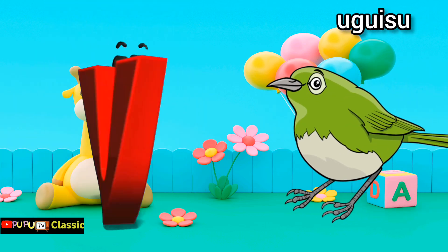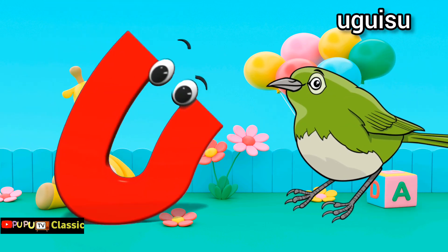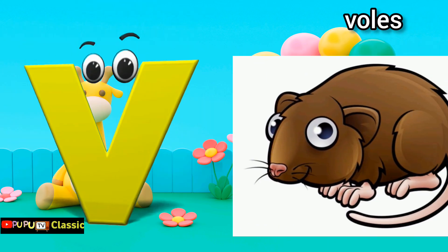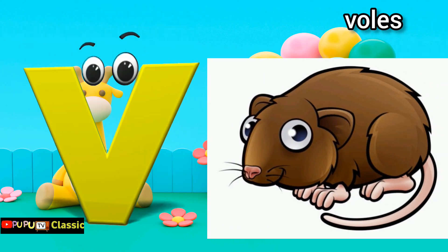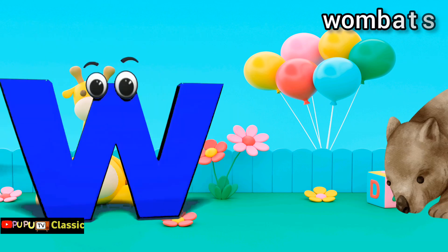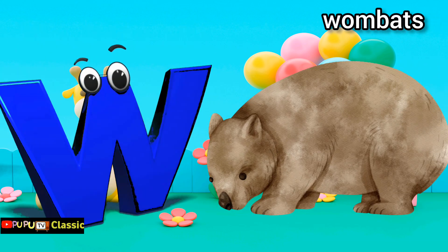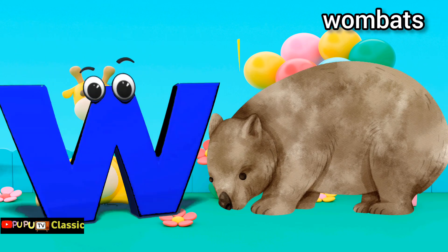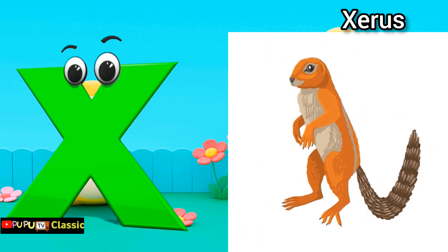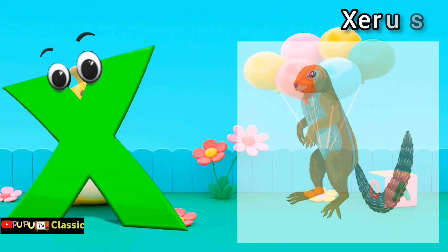U is for Ubisuyu. V is for Voles. W is for Wombat. X is for Xerus.